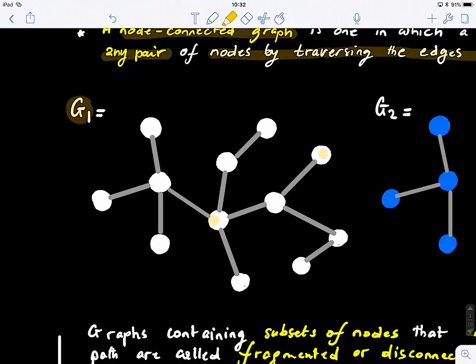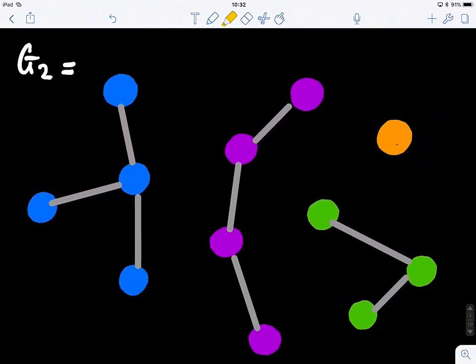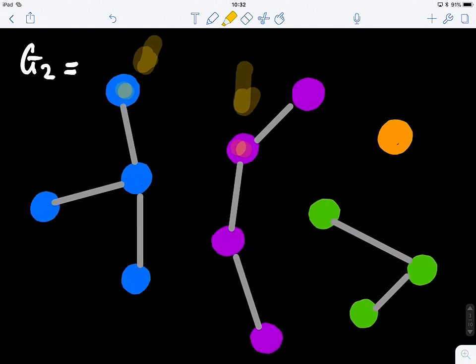Now if we look at this graph, G2, what is happening to this graph? So for example, if I examine these two nodes, can I go from this node to this node? No, right? So basically this graph, the graph G2, is not node connected. So it's broken, it's fragmented, it has different disconnected subgraphs.